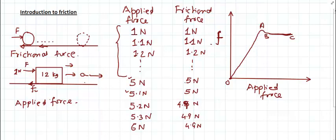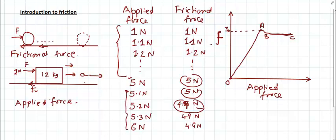Then the frictional force reaches its maximum value of 5 newton — this is the maximum value at point A, at approximately 5 or 5.1 newton. If you further increase the applied force, in the part BC we observe that the frictional force decreases slightly and then remains constant. Point A represents the maximum value, and the region OA is where friction increases with applied force.